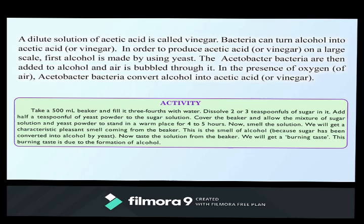In order to produce acetic acid or vinegar on a large scale, first alcohol is made by using yeast. Thereafter, Acetobacter bacteria — that is the name of the bacteria — are added to alcohol and air is bubbled through it. In the presence of oxygen from the air, Acetobacter bacteria converts alcohol into acetic acid or vinegar.